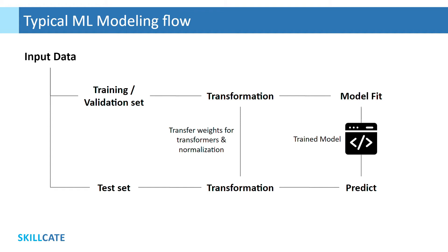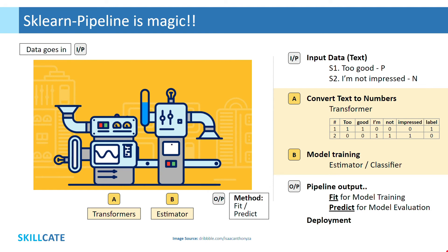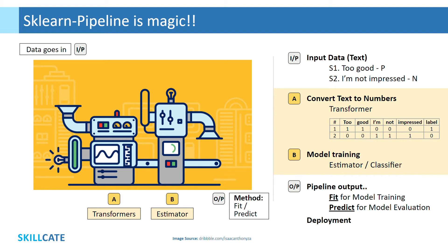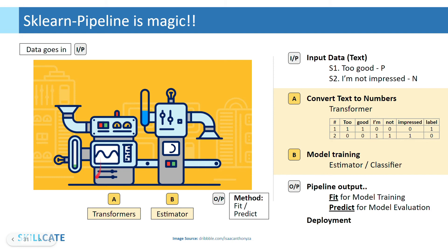Now, how do we ensure that we achieve the end goal by putting in minimal coding efforts? This is where the sklearn pipeline comes in. It is a major productivity tool to collapse all preprocessing and modeling steps into a single line of code. In layman terms, sklearn pipeline is like a factory where sequential transformation operations are performed on input data, followed by a single sklearn estimator.